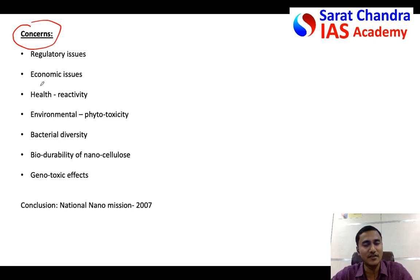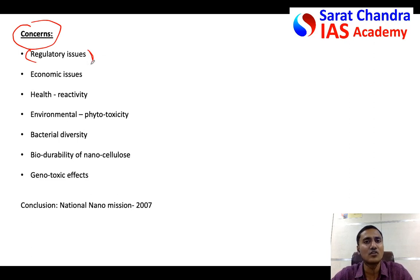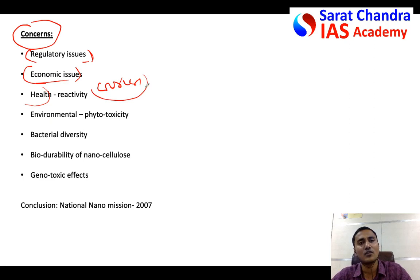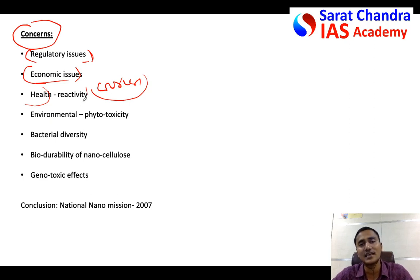The second part of the question asks about the various concerns of nanotechnology in agriculture. One concern is regulatory issues — regulating the application of nanotechnology is difficult, which is why the guidelines were released. Second is economic concern — nanotechnology applications in agriculture are expensive. Third is health concern — farmers, agricultural laborers, and workers handling nano capsules and nano modules may face adverse health effects due to reactivity of nanotechnology products.